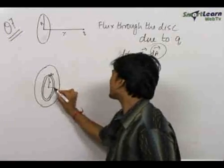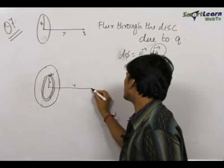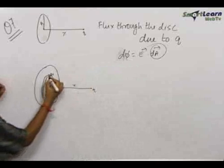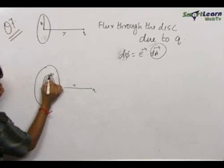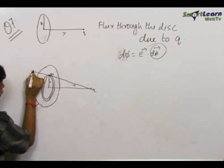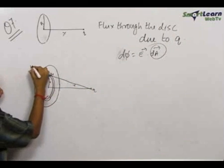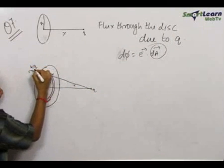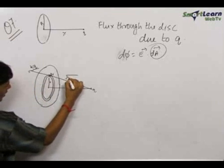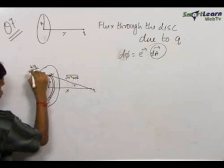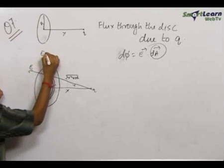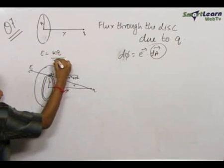On the axis at a distance x we have a charge q. Due to this charge q, at the point of the ring there is an electric field equal to kq upon (r² + x²), since the distance from the charge to the ring point is √(r² + x²).